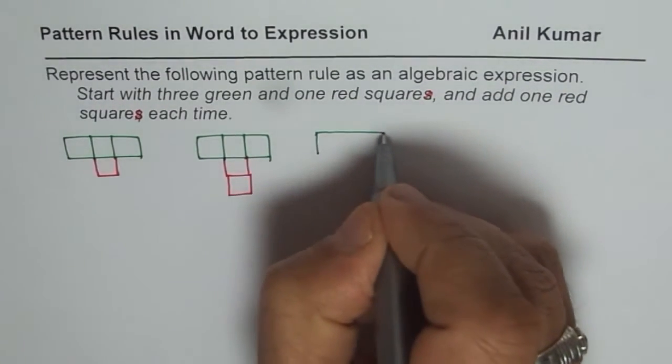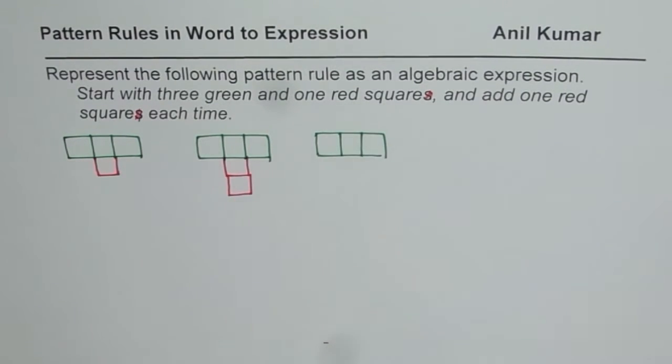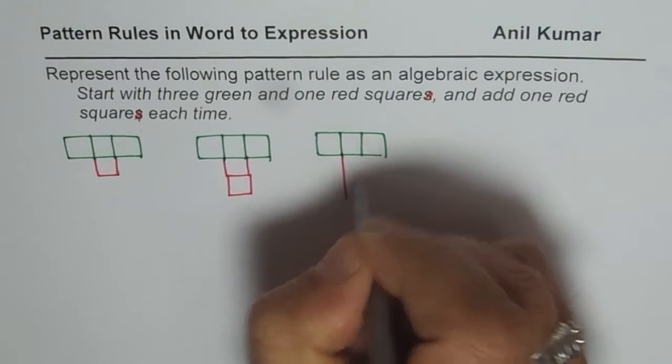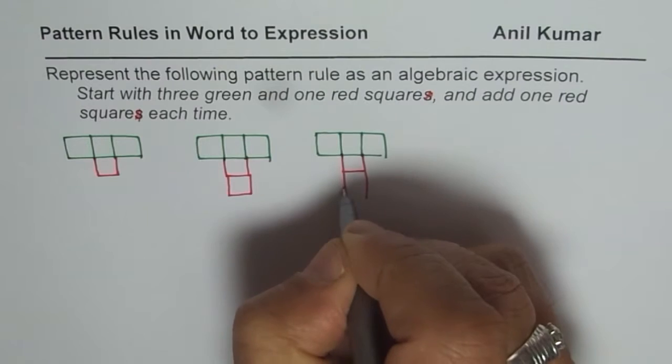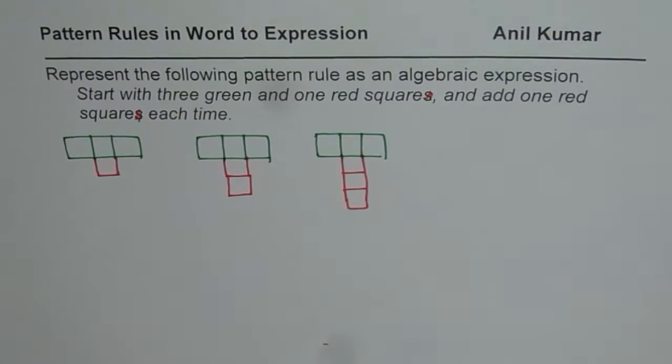Then again we can draw a pattern like this, and we can have kind of a T figure. The length increases for the T. So 1, 2, and say 3. So you can form a pattern. That is the kind of pattern we are looking for.